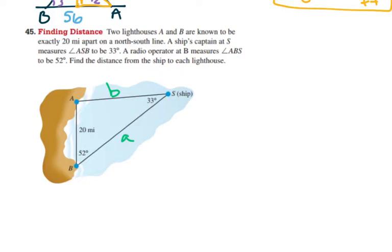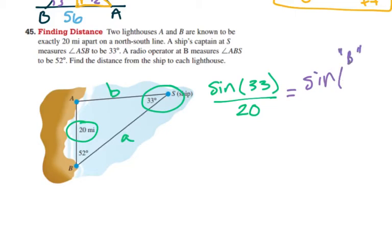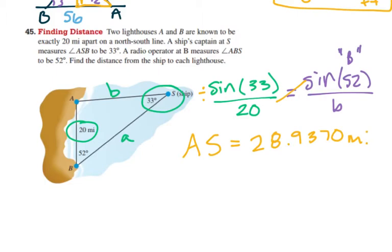Alright, so let's see. Definitely going to use law of sines to find this, because I have a proportion I can set up of S with side S. So sine of 33 and 20 is going to equal angle B, so sine of 52 over B. And we'll cross multiply and divide, and realize that between A, S, or side B on my diagram, sine 52 times 20 divided by sine of 33 is 28.9370 miles. Alright, so that's A to S, so the ship to lighthouse A.